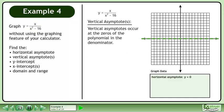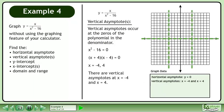Now we will find the vertical asymptotes. Vertical asymptotes occur at the zeros of the polynomial in the denominator. Write the equation x squared minus 16 equals 0. Factor the difference of squares to get x plus 4 times x minus 4 equals 0. The roots of the equation are x equals negative 4 and positive 4. There are vertical asymptotes at x equals negative 4 and x equals positive 4.